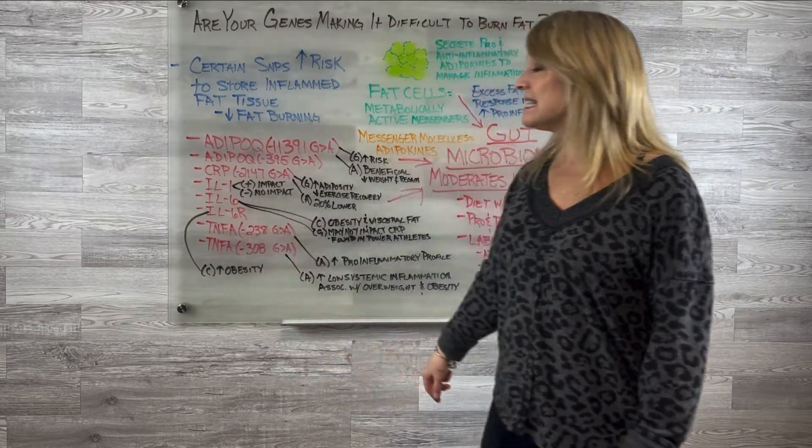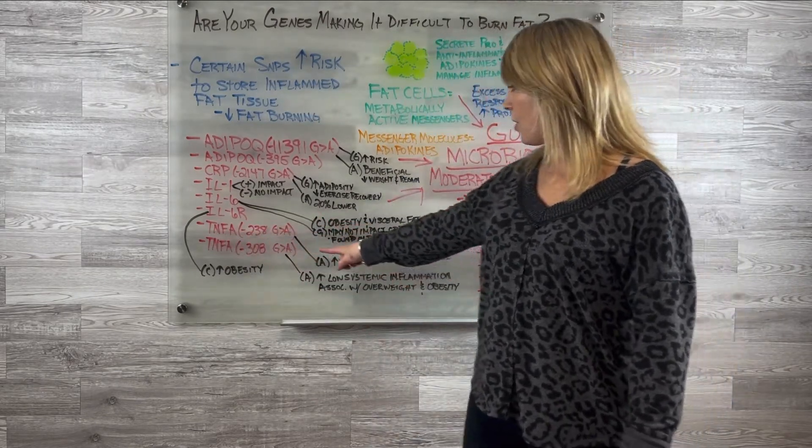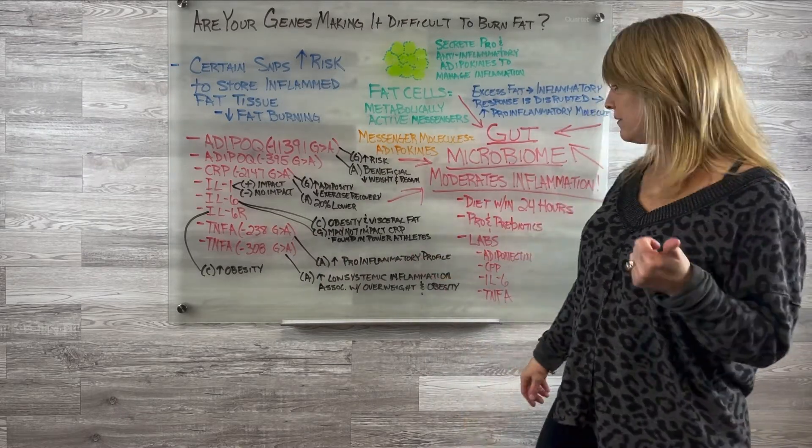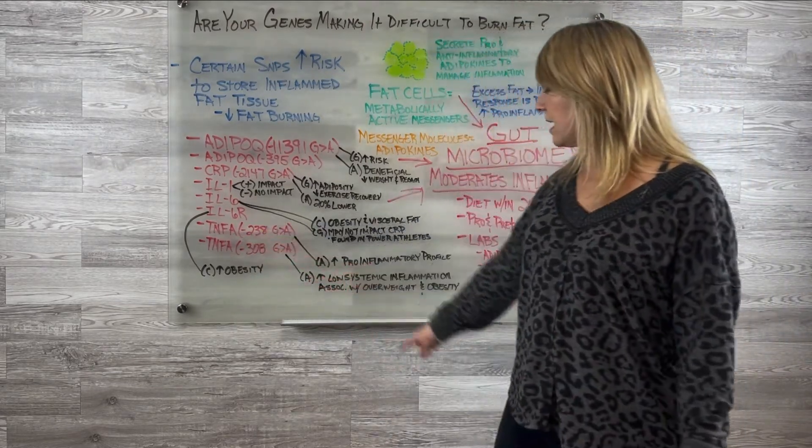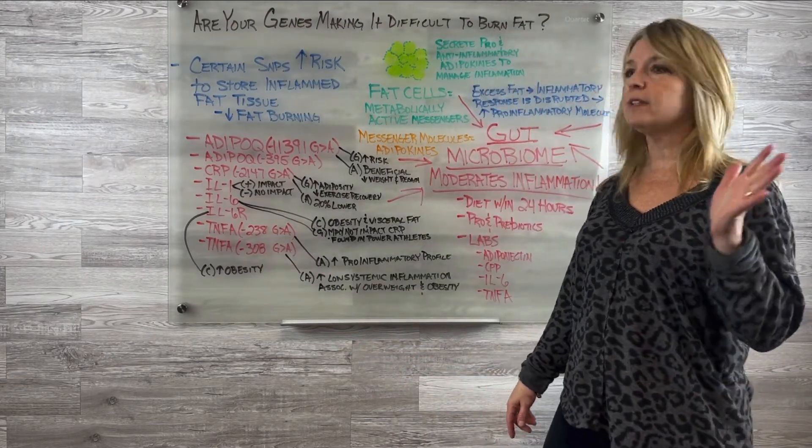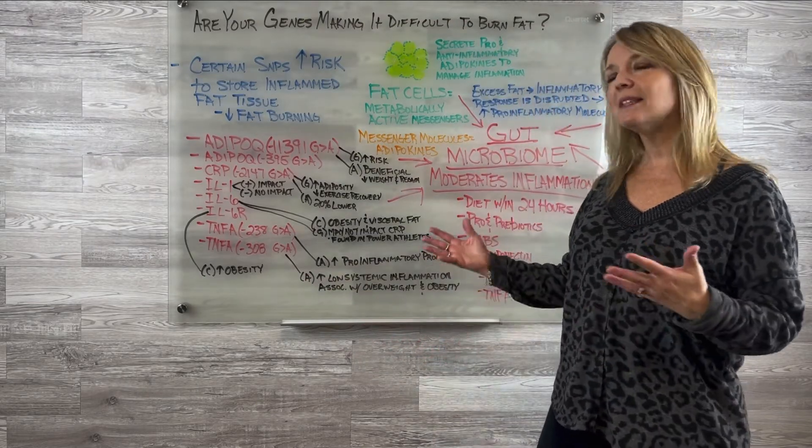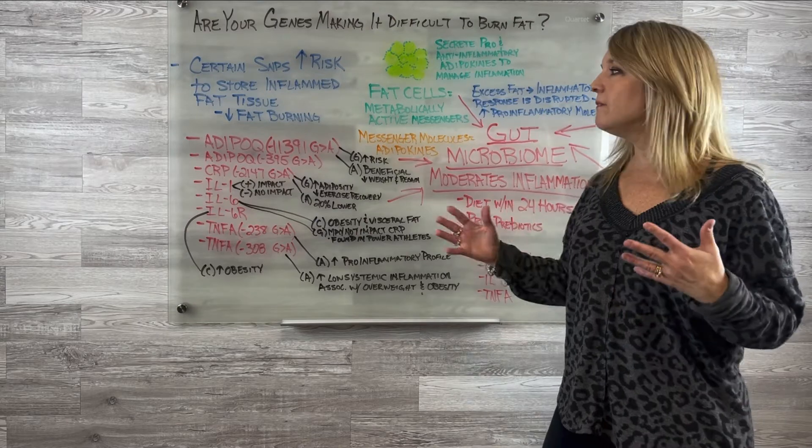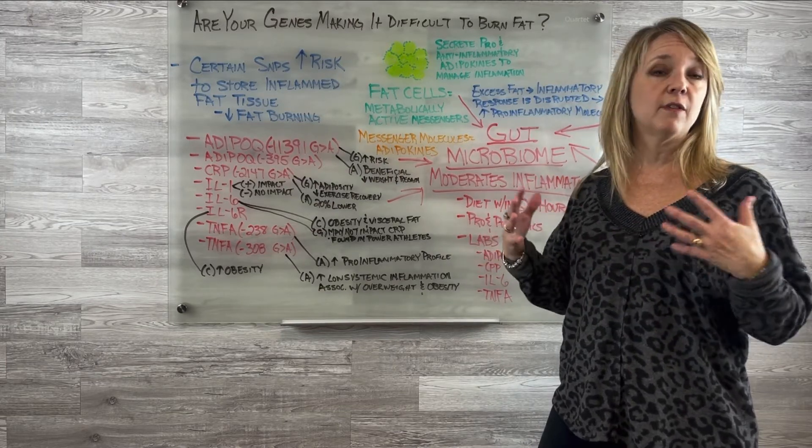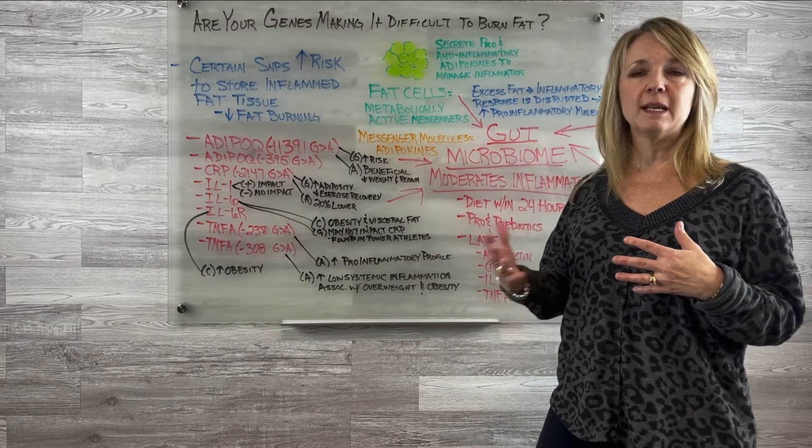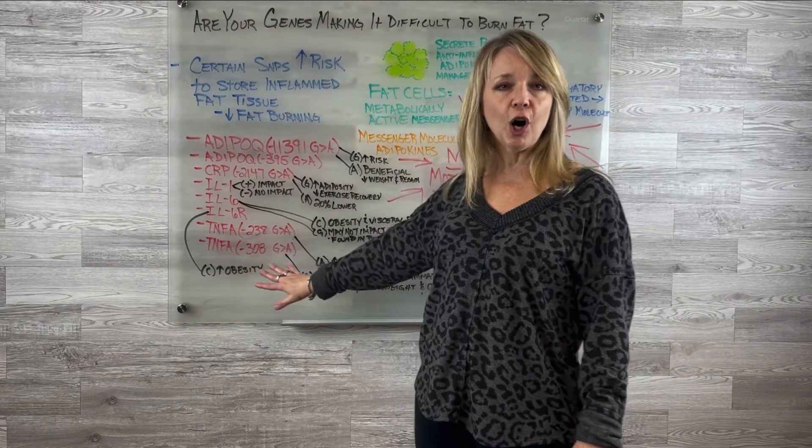Interleukin-1, it's either positive or negative. If you are positive, then it is going to impact your inflammation levels, no impact if it's negative. Interleukin-6, the C allele, obesity and visceral fat is more known with the C allele, whereas the G allele may not impact your inflammatory marker or CRP at all. It is actually found more in power athletes or those athletes that have a short burst of power and do really well. The Interleukin-6R has, with the C allele, you have an increase in obesity. TNF alpha, the G allele or the A allele, so on the A allele you have an increased pro-inflammatory profile. Getting that under control or learning how to turn those off is what will help you be able to burn the fat and lose the weight.